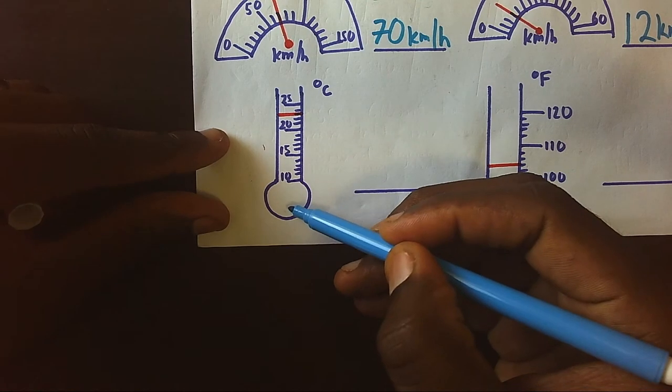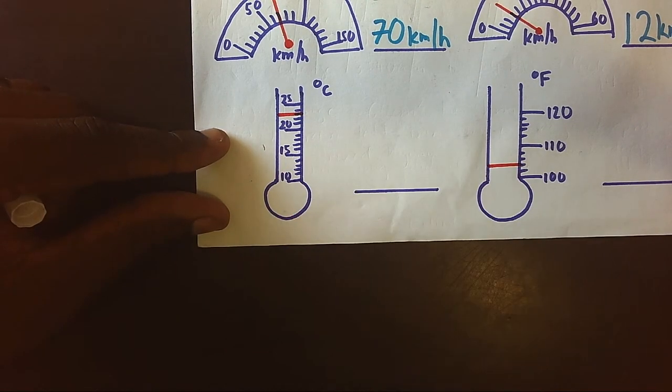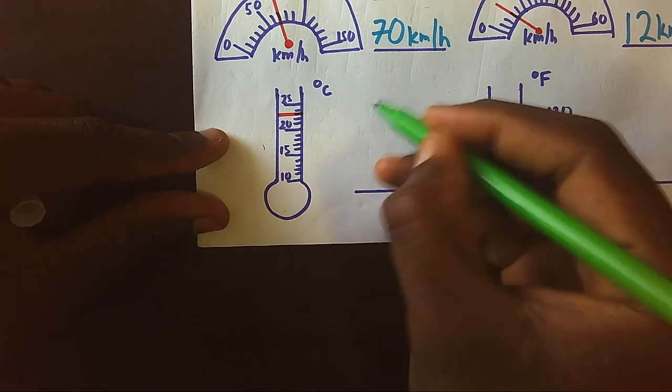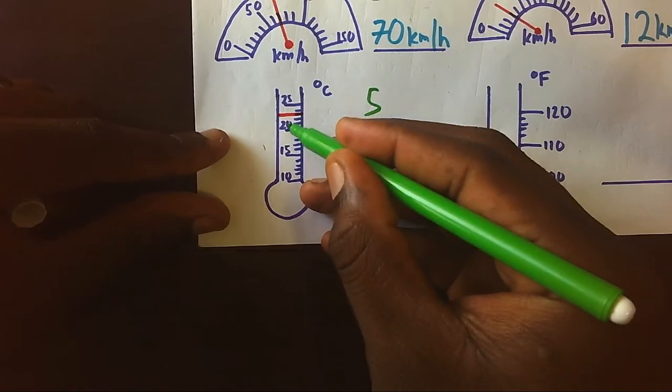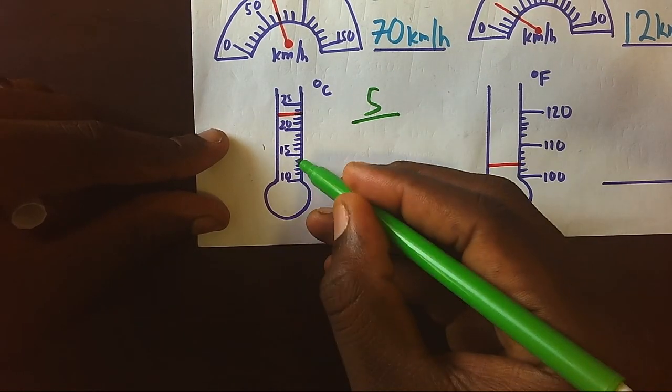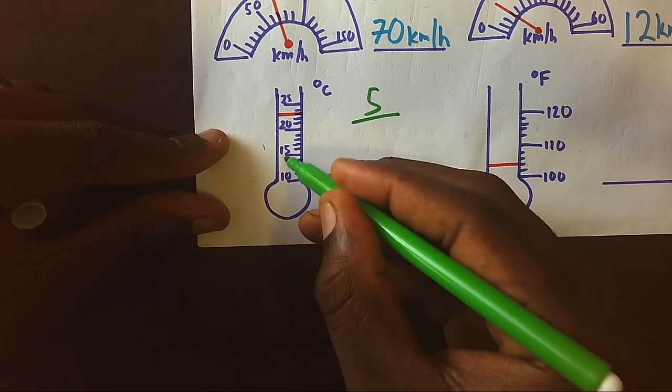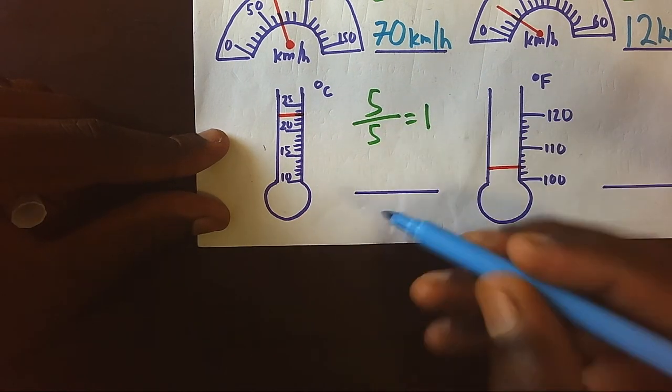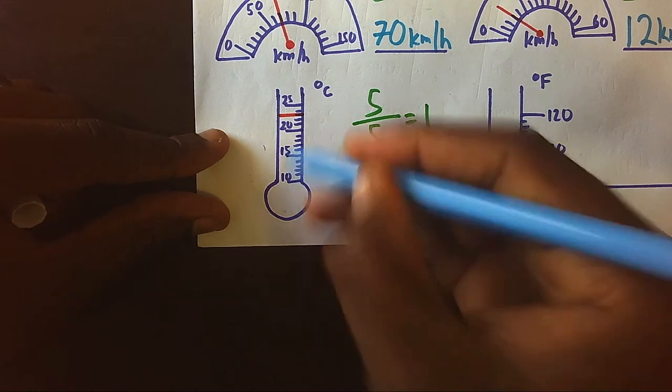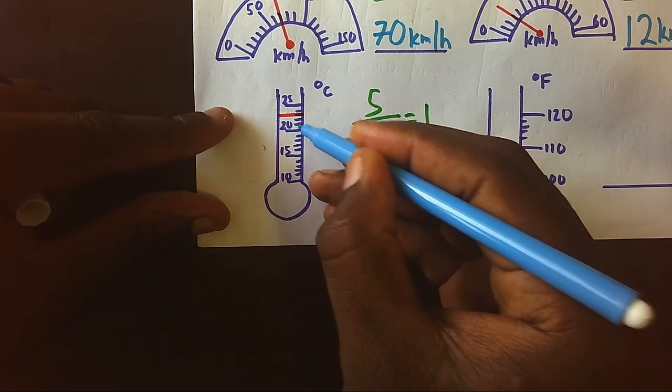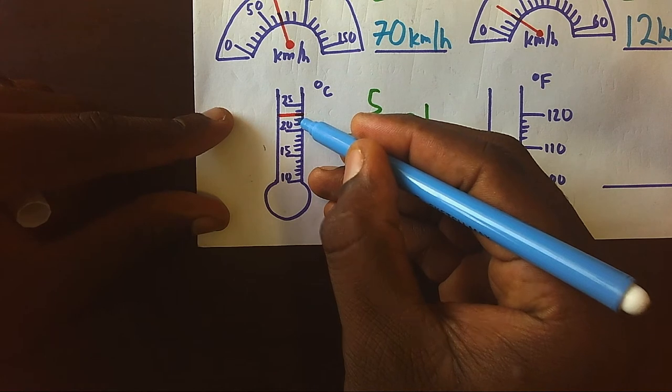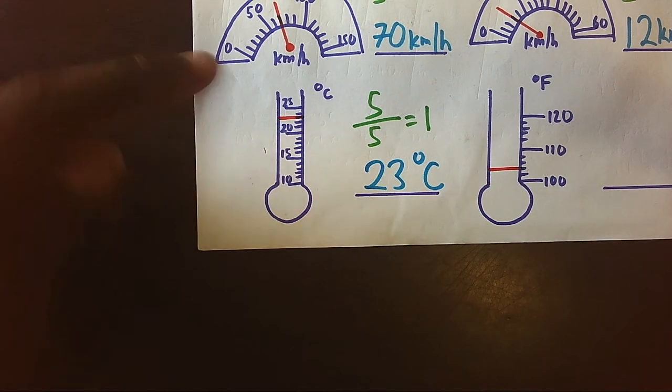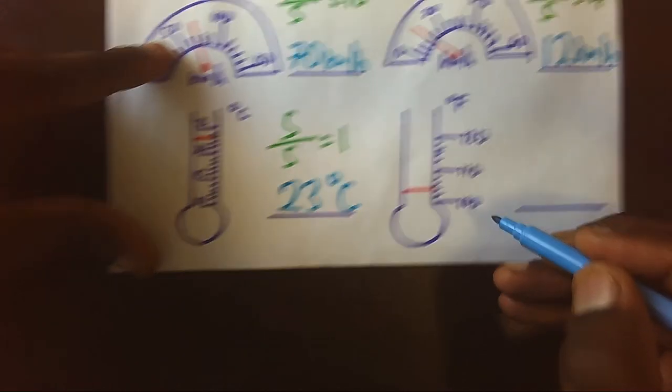But how much is it raised? Again, we shall look at the main reading. That is five, because 10, 15, 20. But how many gaps do we have between 10 to 15? Again, we have five, meaning each gap will represent one. Hence, if I am at 20, this will be 21, 22, 23 degrees Celsius.